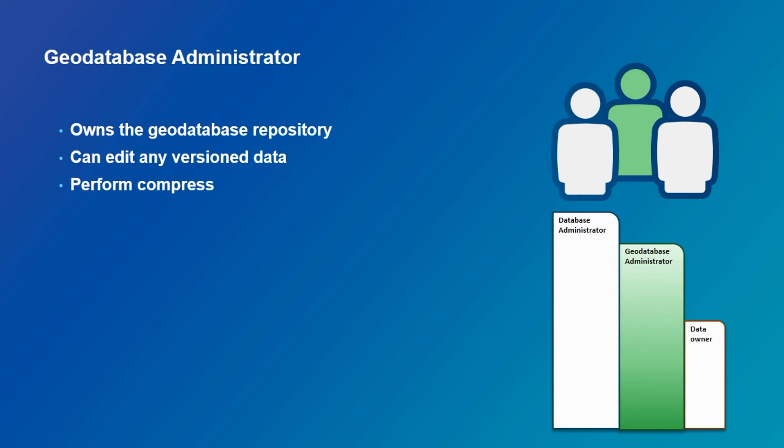The geodatabase administrator is the user that owns all the repository tables. Because they own these tables, they have some additional privileges in a geodatabase. They can edit any data that is registered as versioned, view and reconcile any version, change properties of a version owned by other users, and they are also the ones that perform the compress operation.